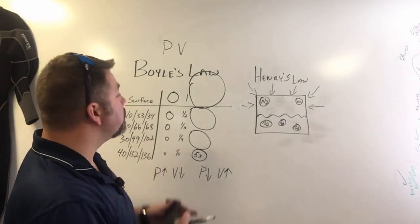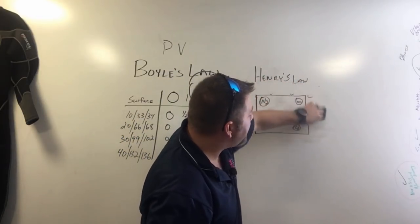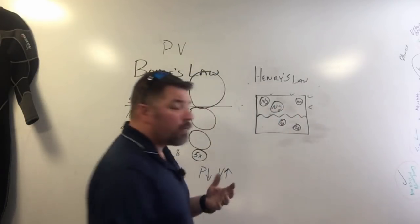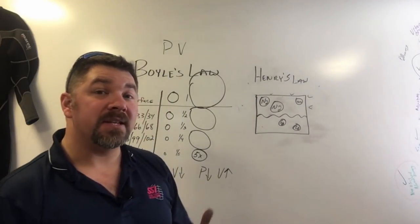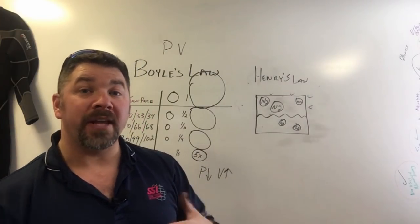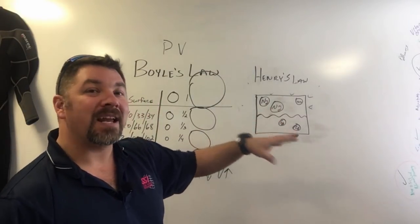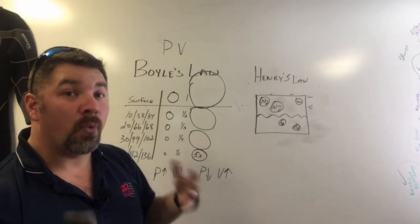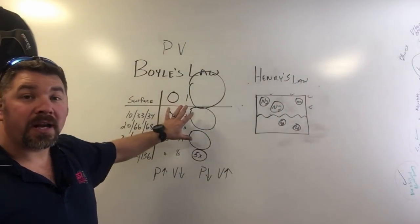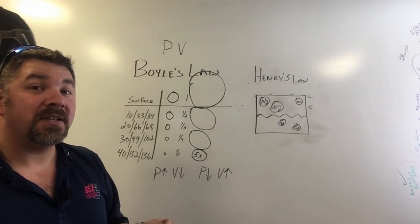Now let's look at how off-gassing works with Boyle's Law. As I decrease pressure by swimming up from the bottom, those nitrogen bubbles will start to come back out of solution. Over time I'm going to retain some of it — this is what we call residual nitrogen. This is the biggest reason why we must dive using either a dive computer or plan dives with tables, because we need to understand how much nitrogen is still left in our body. That is the basic on-gassing and off-gassing process while scuba diving.